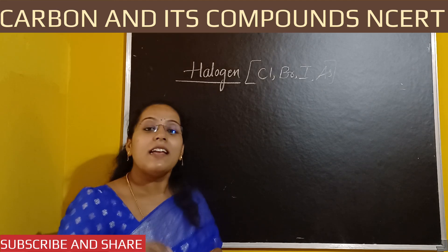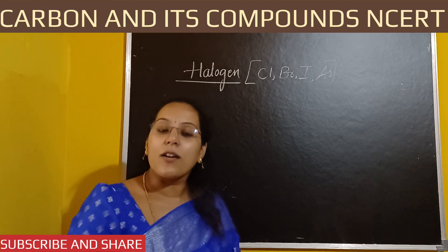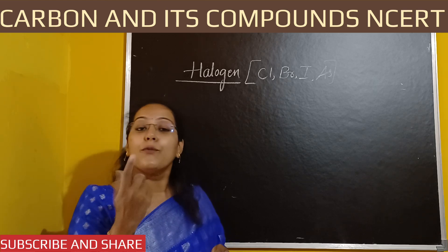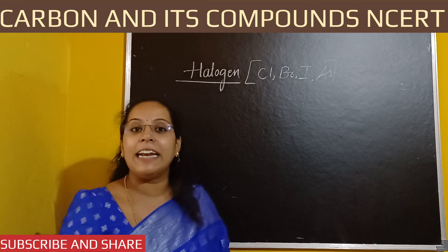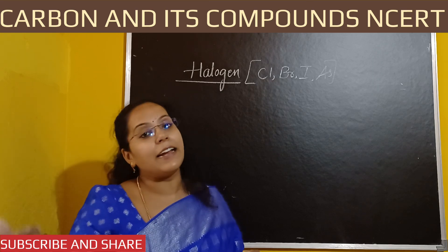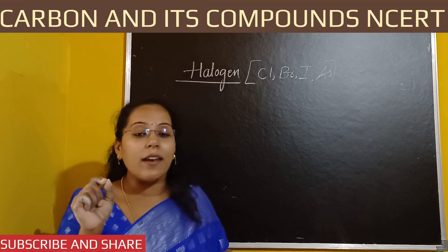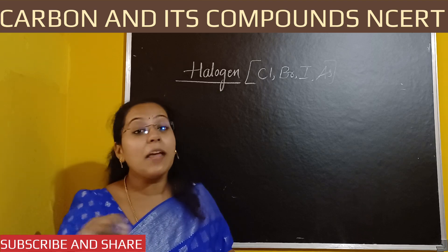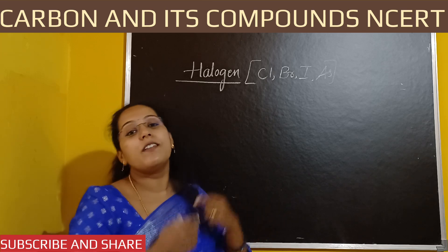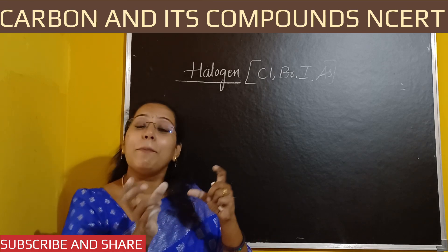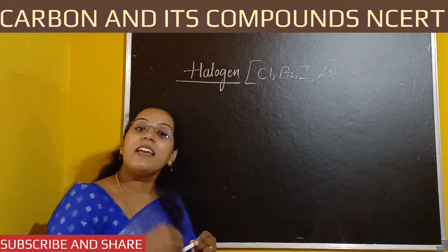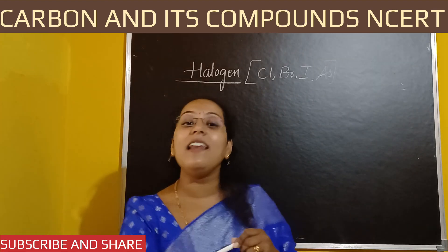Now we are going to understand something different about halogens. We have already studied functional groups like alcohol, aldehyde, and carboxylic acid. Alcohol uses the suffix -ol, aldehyde uses -al, carboxylic acid uses -oic acid, and ketone uses -one — for example, propanone, butanone. These are all given in the suffix part. But when we talk about halogens, the name of these compounds will be given in the prefix part. These halogens are always attached to an alkyl group.